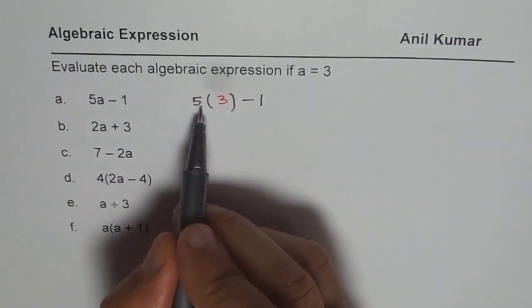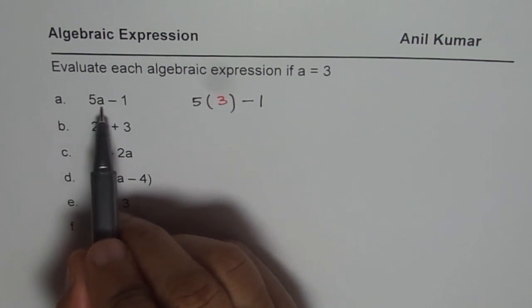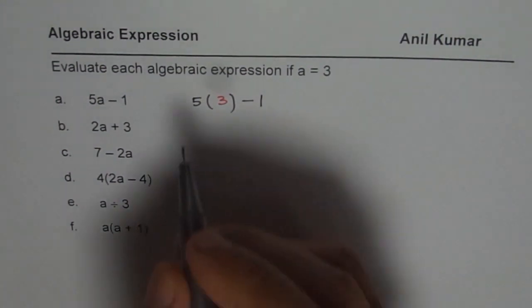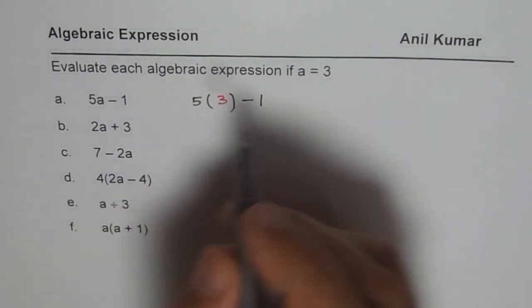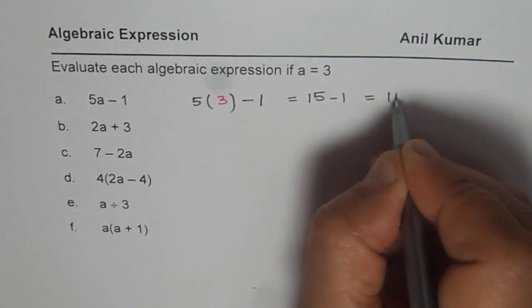Note, I am not writing any multiplication sign. When I write a number with a variable as shown here, it means product. You need to multiply. 5 times 3 is 15. So we get 15 minus 1, which equals 14.